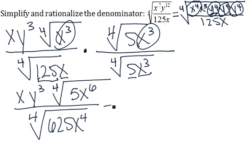Now, the denominator we can simplify to 5x, since the fourth root of 625 is 5, and this simplifies to x.